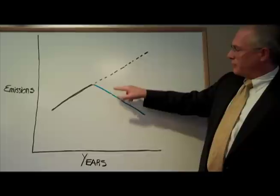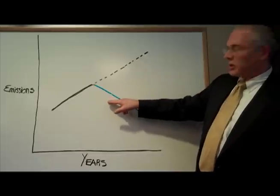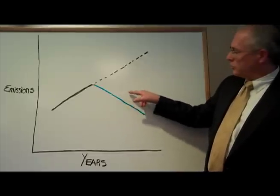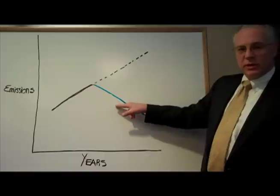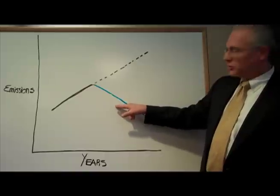Similarly, you might find a situation where many companies were under the limit and only a few were going to be over the limit. In this case, there would be too many allowances and prices would crash.